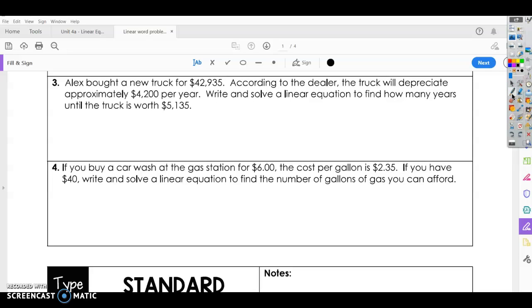Number three. Alex bought a new truck for $42,935. According to the dealer, the truck will depreciate approximately $4,200 per year. So remember, depreciate means going down, and it's going to go down $4,200 per year. Write and solve a linear equation to find out how many years until the truck is worth $5,135.